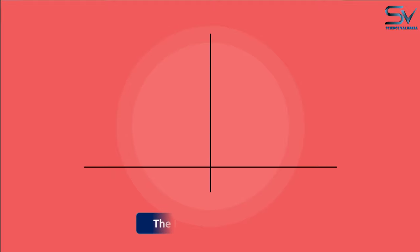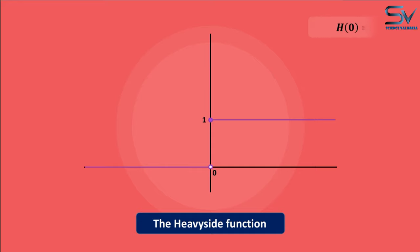Consider the following example, the Heaviside function. Let's put this into practice with this example. You can see a graph of it. At x equals 0, the value of this function is 1.